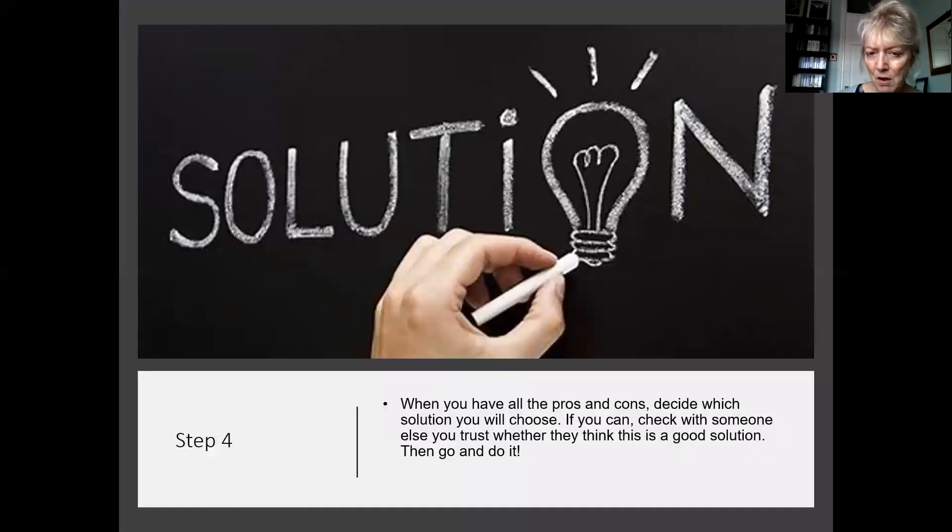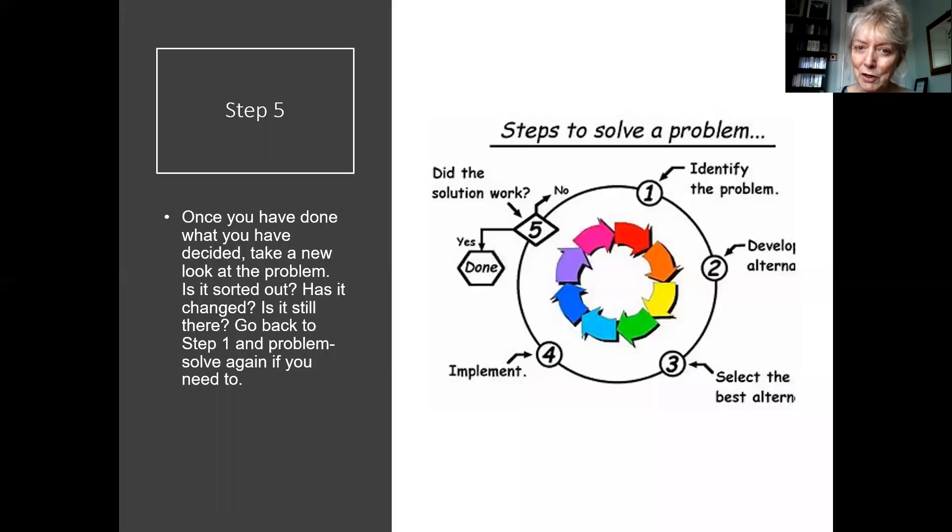Step four: when you've got all of those written out and you can see the pros and cons and consequences, then decide which one solution that you're going to choose, and it's really important to be again specific. Which is the solution that I'm going to choose at this point in time? If you can, check with someone else, someone who's a trusted friend or an adult who supports you in school, and just check out that it really is in their view as well the best solution for you, and then just go and do it. Have a go, be that little bit brave and have a go.